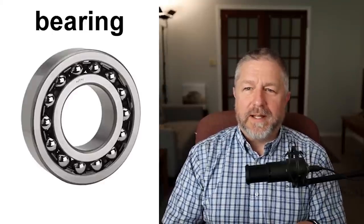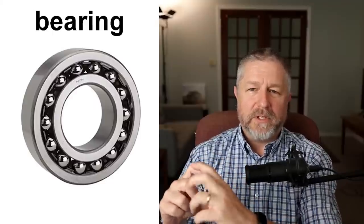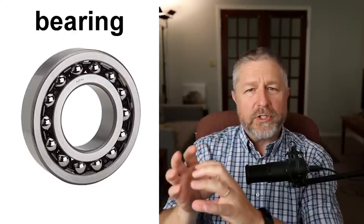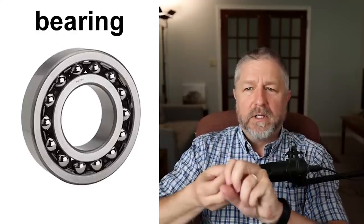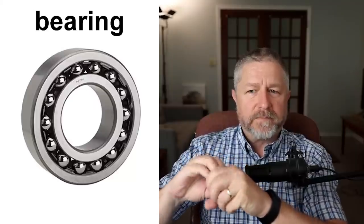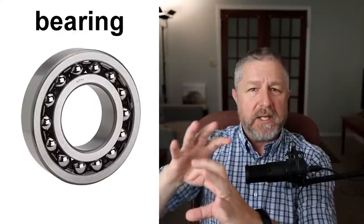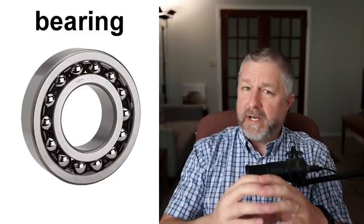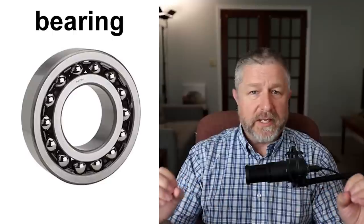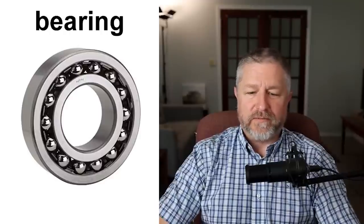A bearing is something we use so things turn smoothly. If you were to put a shaft through another piece of metal without a bearing, there would be a lot of friction and it would generate heat. But when you put a bearing in, it spins freely. Every tire on your car has a bearing at the center, and on your bicycle, at the center of each wheel, there is a bearing — this is what allows those things to turn freely.